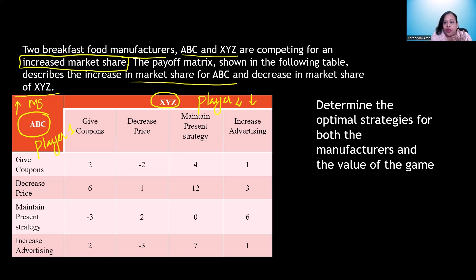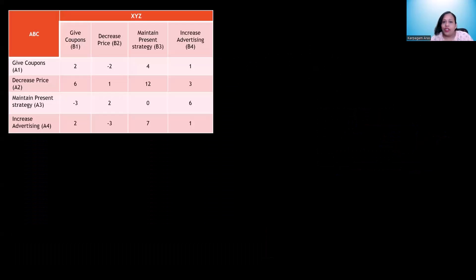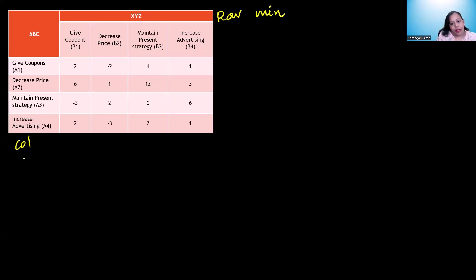We are asked to find the optimal strategy for both manufacturers — ABC and XYZ — and then find the value of the game. First, let me show you how to calculate it. The first step is to find the row minima and then the column maxima.